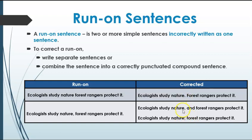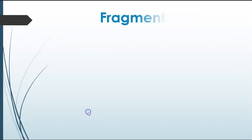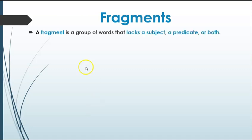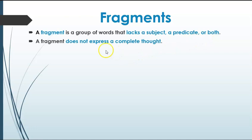To fix a run-on, you can: turn the comma into a period to make two sentences; add the conjunction (such as 'and' or 'but') after the comma; or change the comma to a semicolon. Any of these three methods works when you've incorrectly used only a comma to connect independent clauses. Fragments are another problem. A fragment is a group of words that lacks a subject, a predicate, or both, or does not express a complete thought.